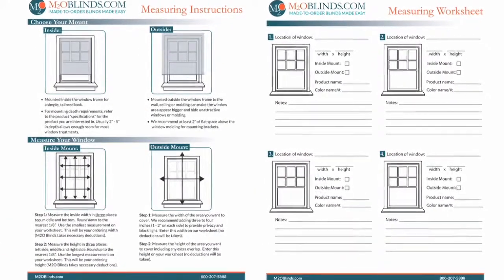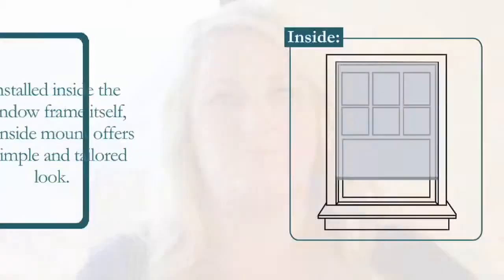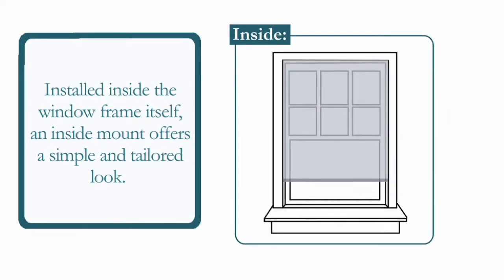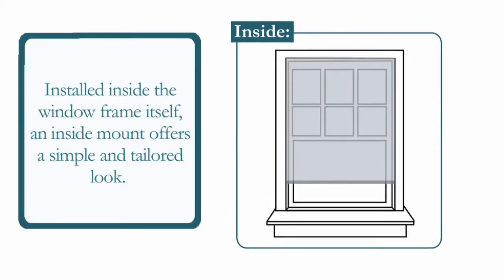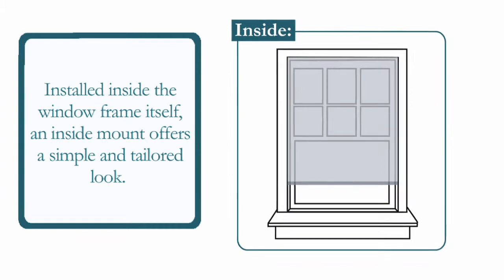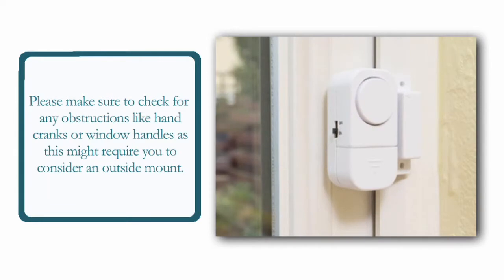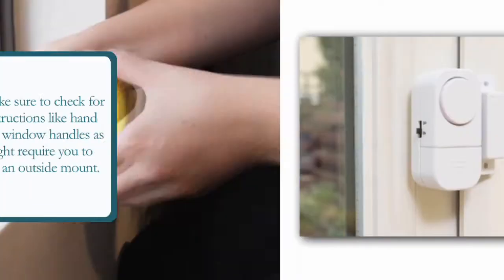Next, you'll need to decide if you want an inside mount or an outside mount. Installed inside the window frame itself, an inside mount offers a simple and tailored look. Please make sure to check for any obstructions, like hand cranks or window handles, as this might require you to consider an outside mount.